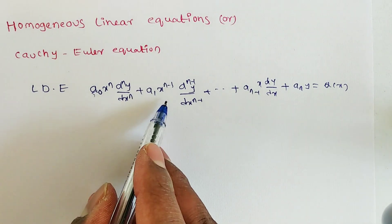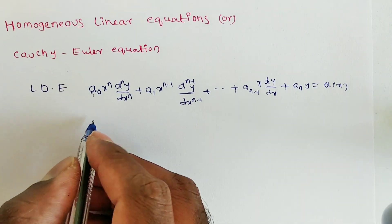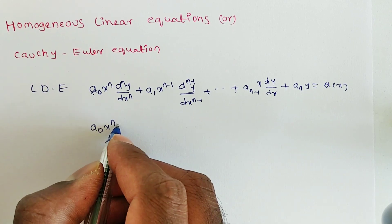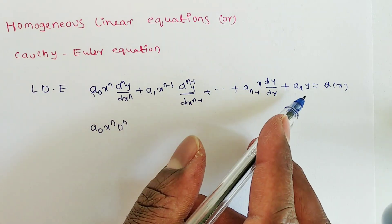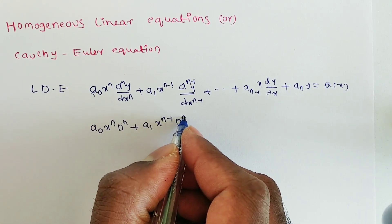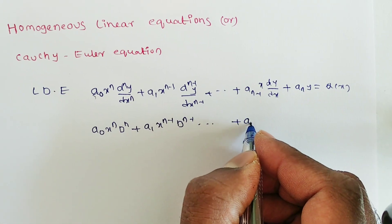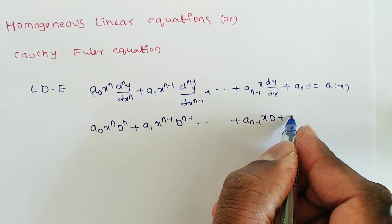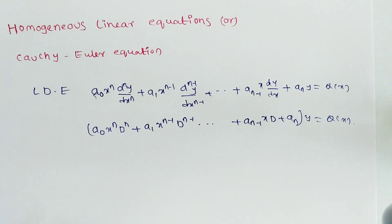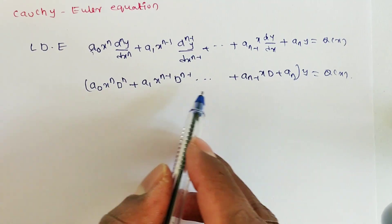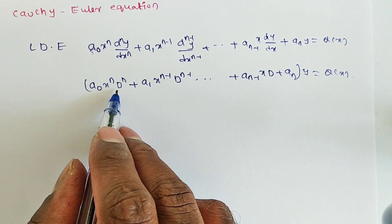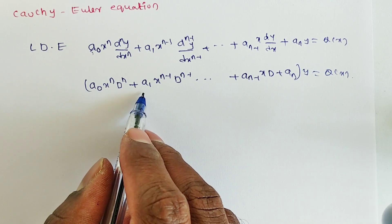This equation has variable coefficients. Using the operator d, we can write A₀ xⁿ dⁿ + A₁ xⁿ⁻¹ dⁿ⁻¹ + ... + Aₙ₋₁ x·d + Aₙ, all acting on y, equal to Q(x). This is again in the form f(d)·y = Q(x), but here the coefficients of dⁿ are functions of x, not constants.